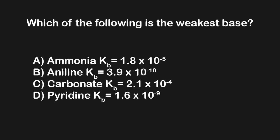Now let's look at an example in the context of acids and bases. This question asks which of the following is the weakest base, giving us several bases with their Kb values. Let's first think about whether we want the highest or lowest Kb value. Since it's asking about an extreme, we can eliminate intermediate values first. Comparing ammonia (Kb = 1.8 × 10⁻⁵) and carbonate (Kb = 2.1 × 10⁻⁴), carbonate is larger, making it one of the extreme values. Ammonia is smaller than carbonate, so ammonia is eliminated as an intermediate.